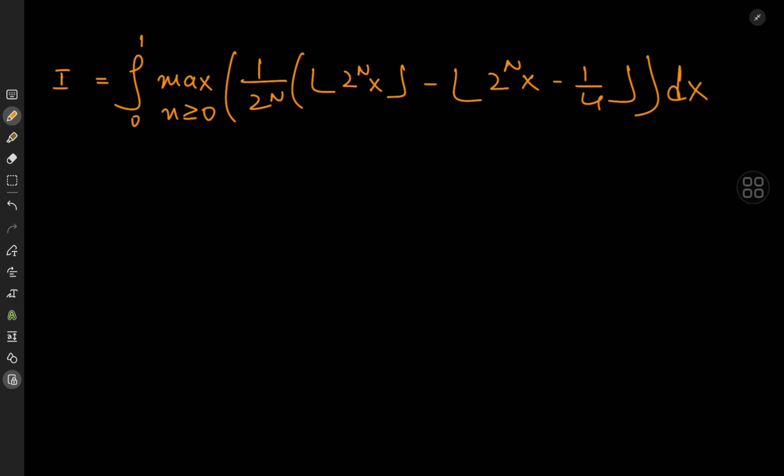First let's understand the problem. We're interested in integrating from 0 to 1 the maximum, for every non-negative integer n, of 1 by 2 to the n times floor(2^n · x) minus floor(2^n · x minus a quarter).